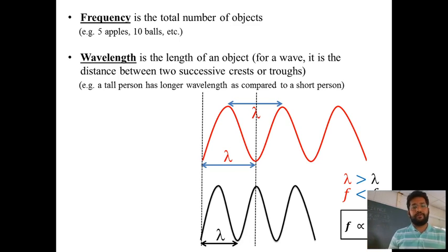On the contrary, wavelength is the dimension of an object. For a wave, it is the distance between two successive crests or two successive troughs. A taller person has a longer wavelength and a short person has a short wavelength for your understanding.